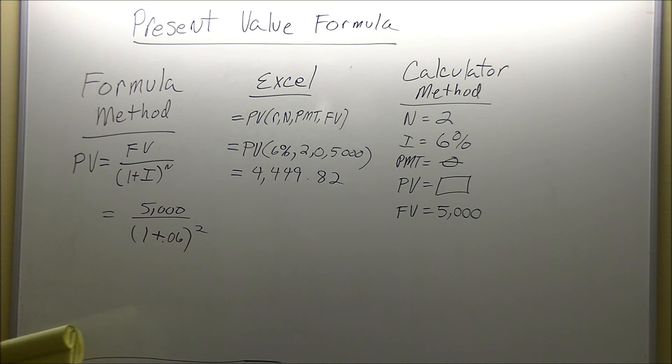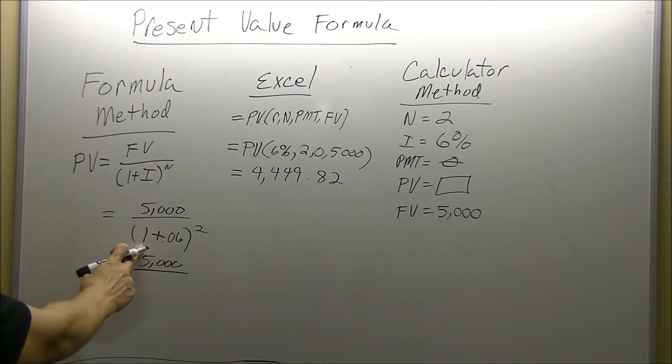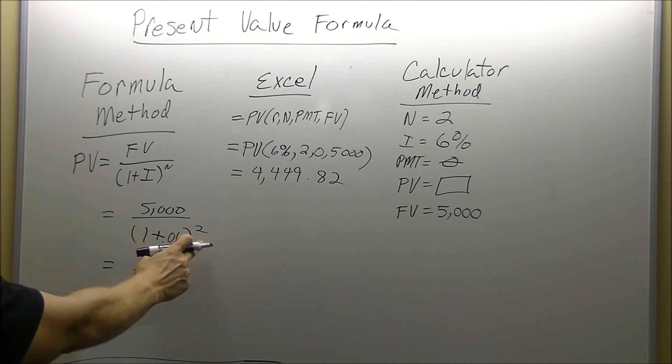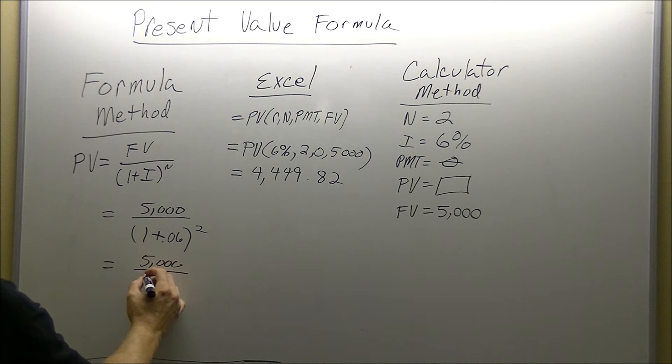Here's our step 2, next thing we're going to do, set up our structure, drop down our $5,000, we're not doing anything with that yet. And we're going to follow our order of operations, 1 plus .06 will give us 1.06, and we're going to raise it to the 2, 1.06, and that's going to give us 1.1236.